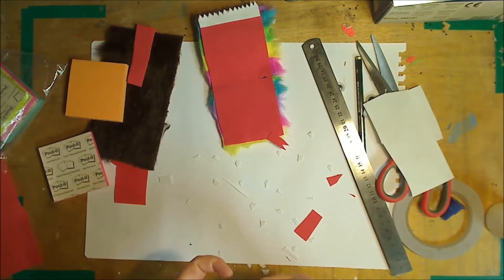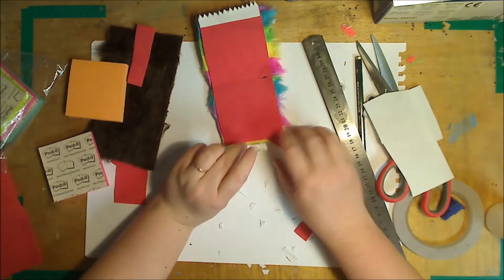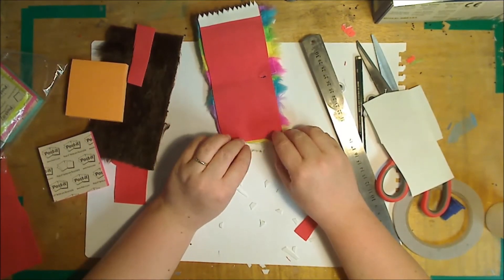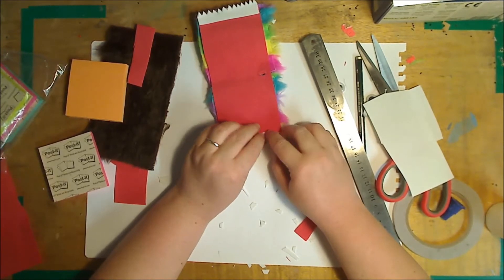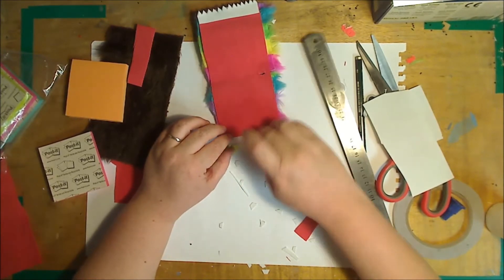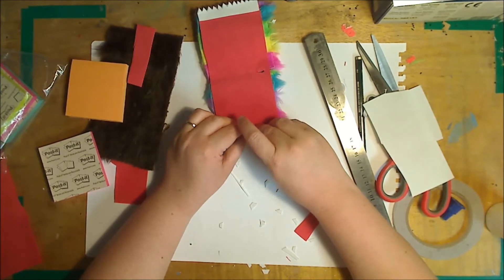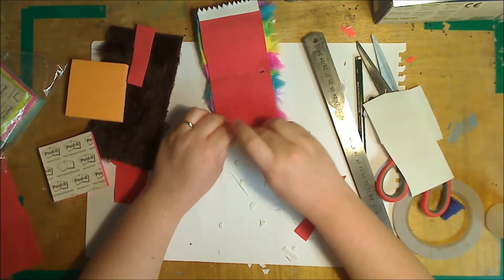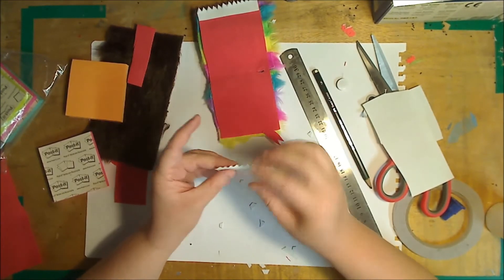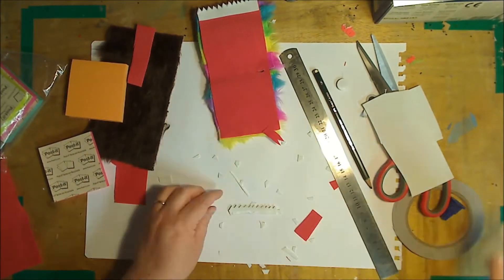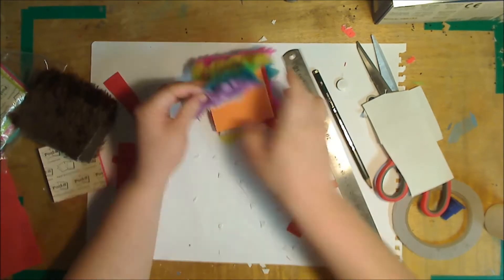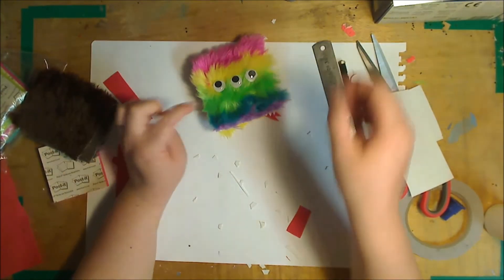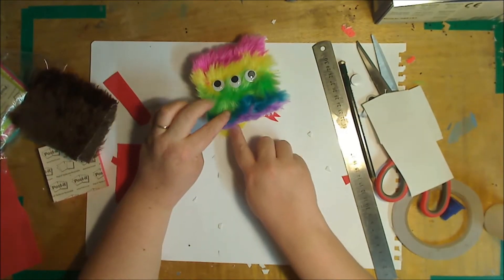And exactly the same with the bottom jaw. Just sliding it slightly under the tongue so it looks like the teeth are coming to the edge there. Now that one's finished with all these little teeth.